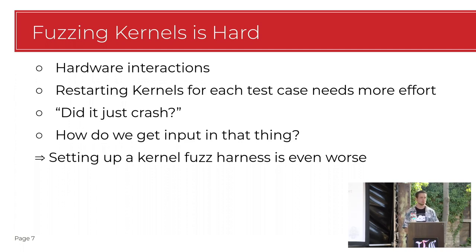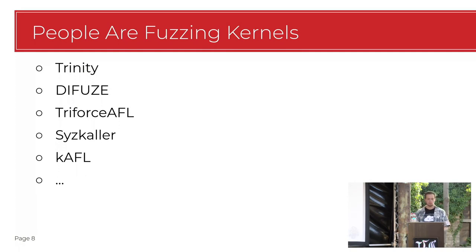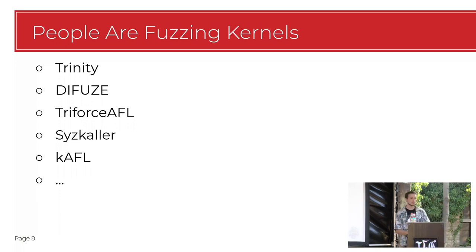The kernel is this weird beast that interacts with everything around it. It's this monolithic thing - at least Linux - and if it crashes it's just gone. You have to restart it or find a way to respawn it quickly. Maybe you overwrite some memory and it doesn't crash - that's even worse, because you found a bug but you'll never know because it just runs on. And getting the right state in a kernel takes 30 seconds to boot. But people are already fuzzing kernels using syscalls - fuzzers like Trinity, Diffuse, Triforce, Syscaller, and Syzkaller all use that user-land API to talk to the kernel.